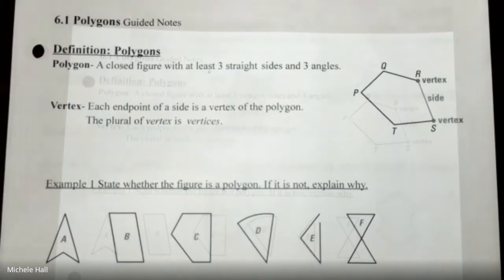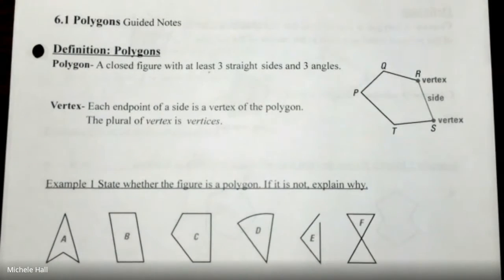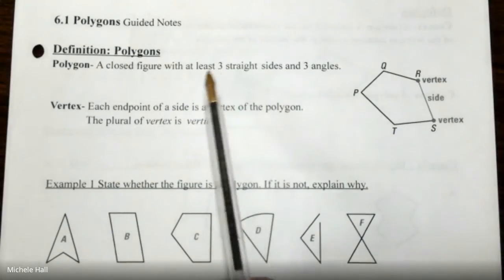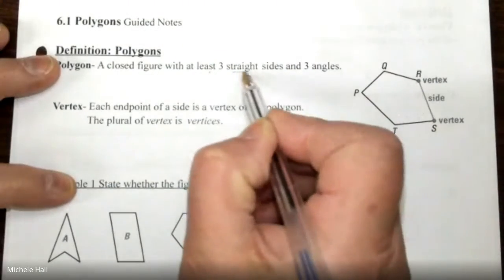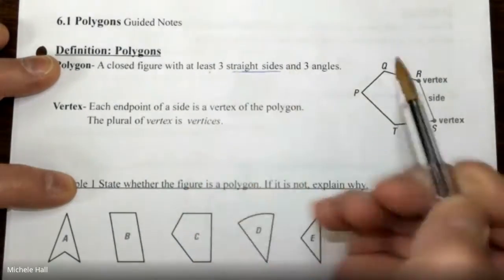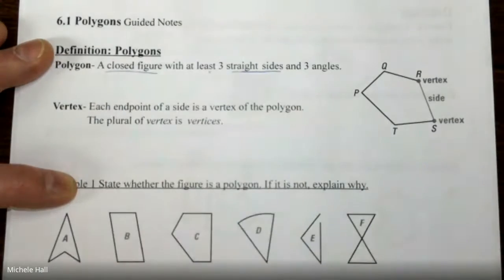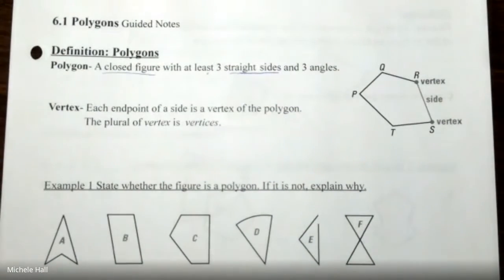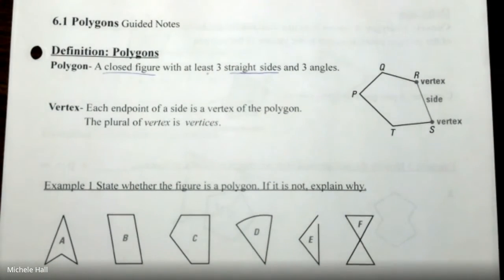Section 6.1: the definition of a polygon is a closed figure that has at least three straight sides and angles. It has to be a closed figure and it has to have straight sides. Can you make a closed figure with two straight sides? That's why it has to be three.